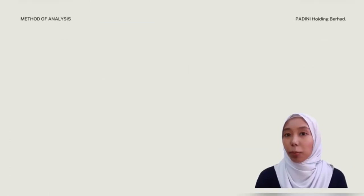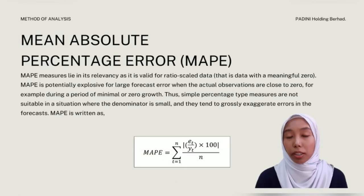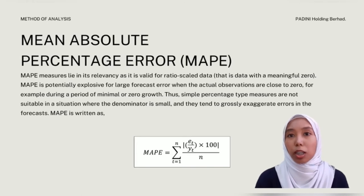Other than MSE, we have mean absolute percentage error, MAPE. It measures lies in its relevance as it is valid for ratio scale data. It is potentially exclusive for large forecast error when the actual observations are close to zero.